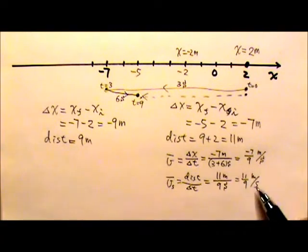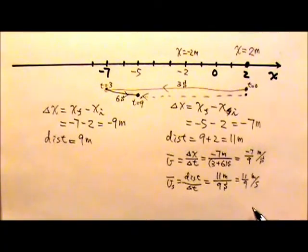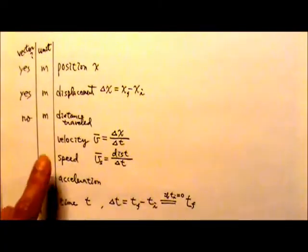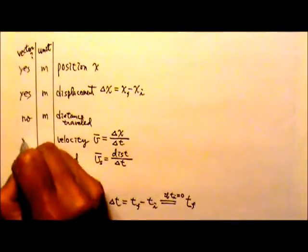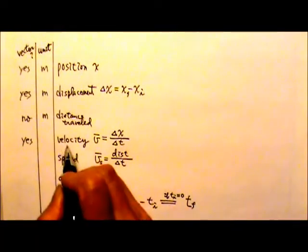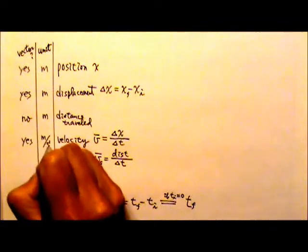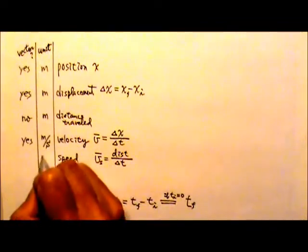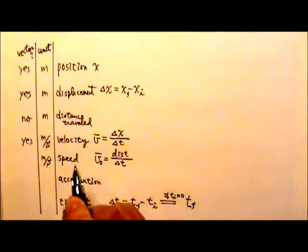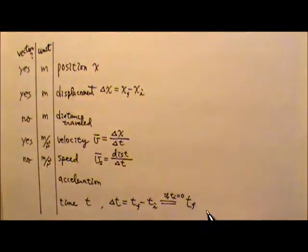Speed tells you how fast, or on average how fast, an object travels. Velocity is a vector because it comes from displacement; it has a standard unit of meters per second. Speed also has a unit of meters per second, but speed is a scalar, not a vector.